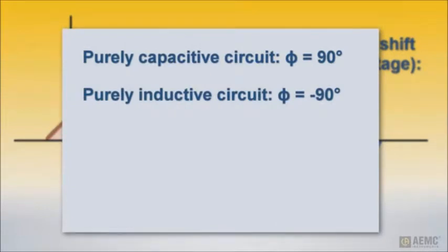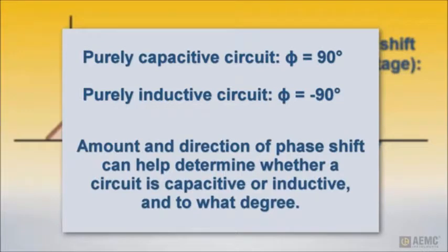In a purely capacitive circuit, phase shift is 90 degrees, while in a purely inductive circuit, phase shift is negative 90 degrees. The amount and direction of phase shift can therefore help you determine whether the circuit under test is capacitive or inductive, and to what degree.